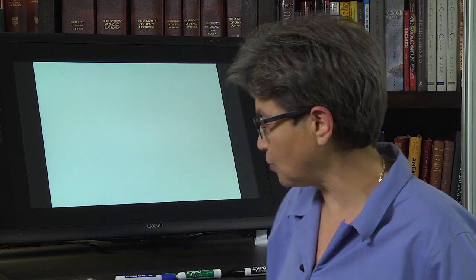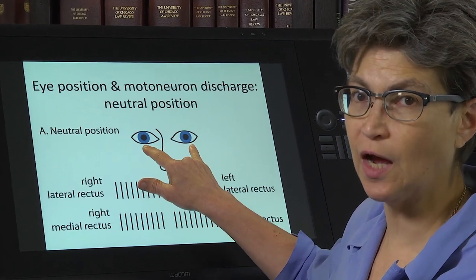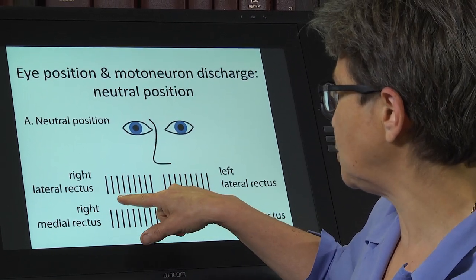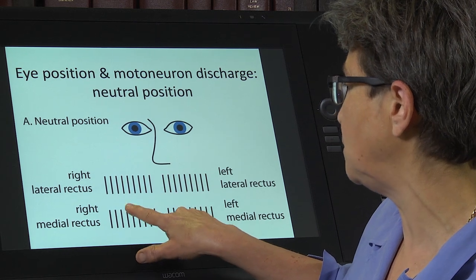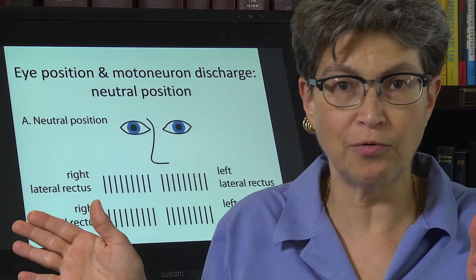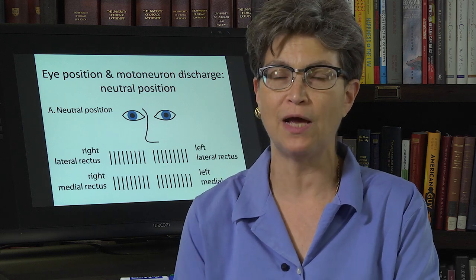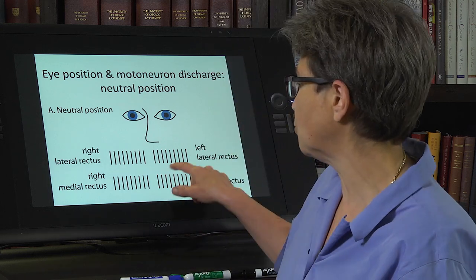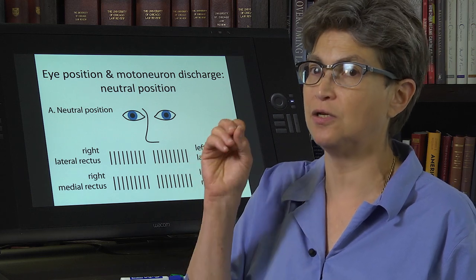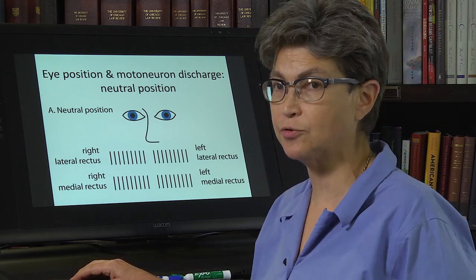Let's talk about the extraocular muscles and their motor neurons, starting with the muscles. If a person is looking straight ahead, that's the neutral position of the eyes. In that situation, there's activity in both the left and right lateral rectus and left and right medial rectus — balanced activity in both lateral recti and both medial recti. This is really different from, say, the biceps at rest, where there's no activity in the motor neurons. The extraocular motor neurons drive constant excitation of the muscles, which makes them very different from any other skeletal muscles.